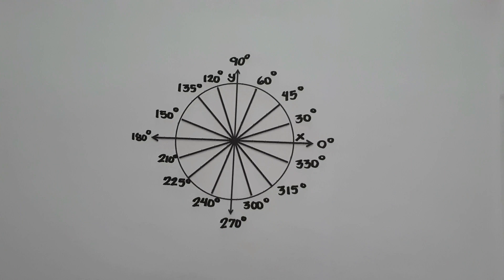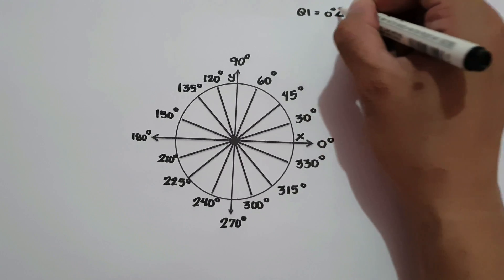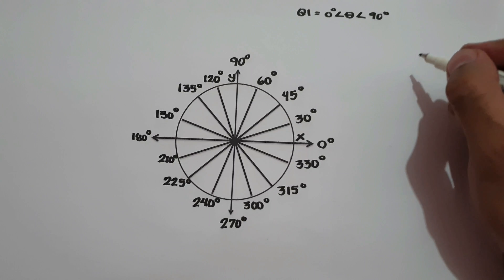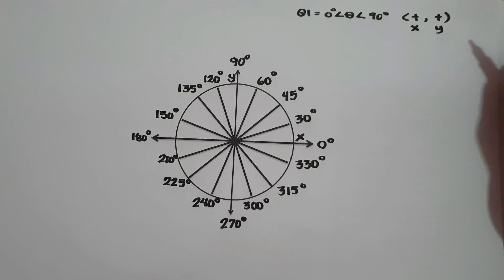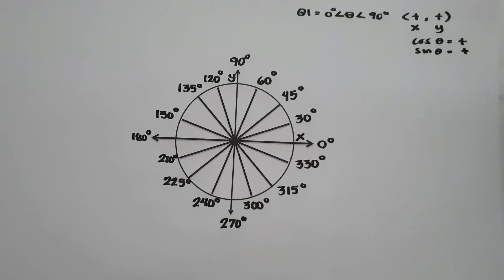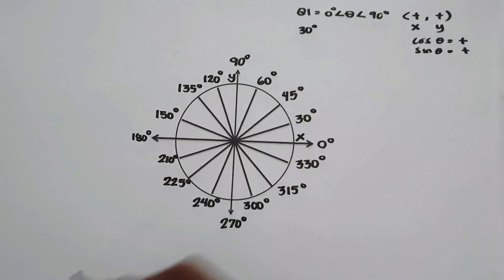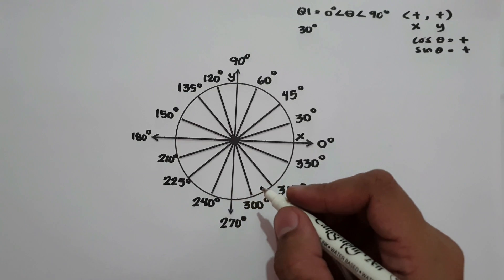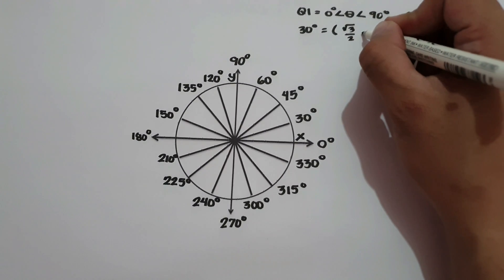We are going to identify the coordinates of each angle in the unit circle. Let's start with quadrant 1, which exists between 0 degrees and 90 degrees. The sign in quadrant 1 is positive and positive — positive values for both x and y. That means cosine theta is positive and sine theta is also positive. Let's start with 30 degrees. 30 degrees is located in quadrant 1, and the reference angle is equal to the given measure. Therefore, cosine 30 is square root of 3 over 2, and sine 30 is 1 half.